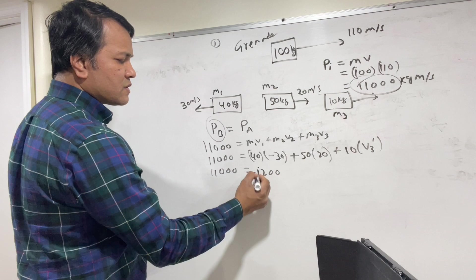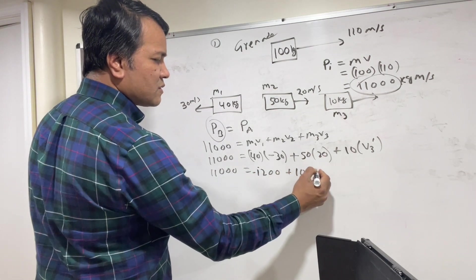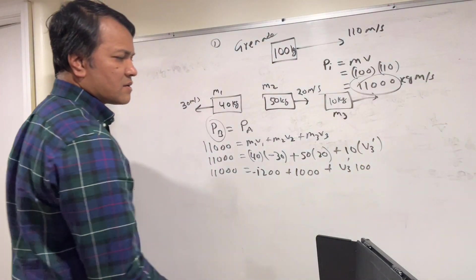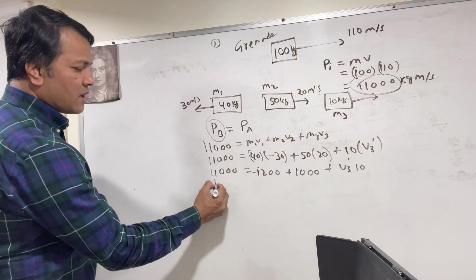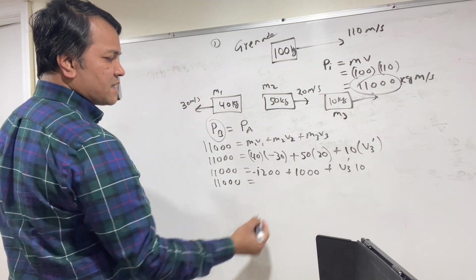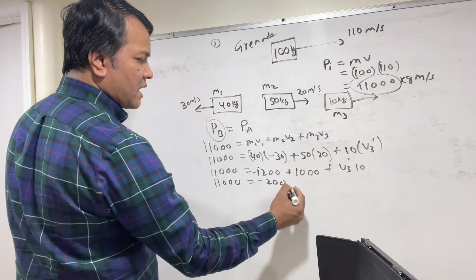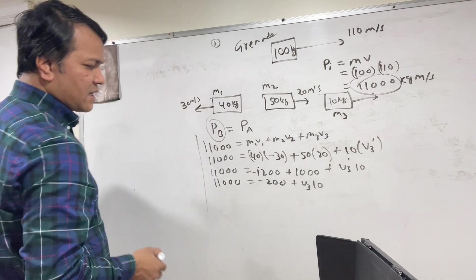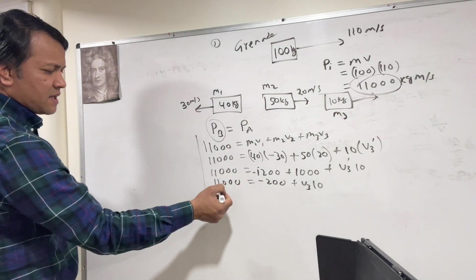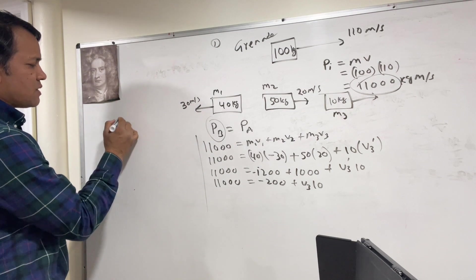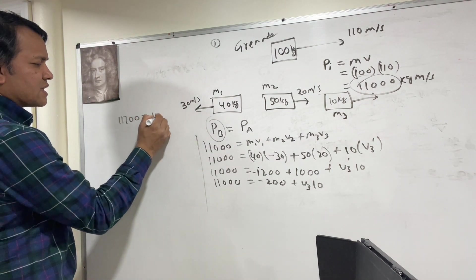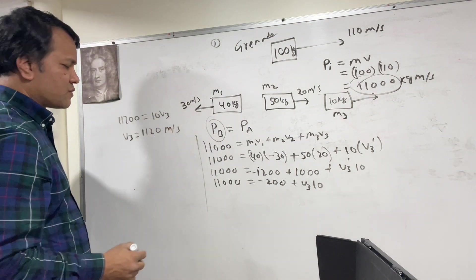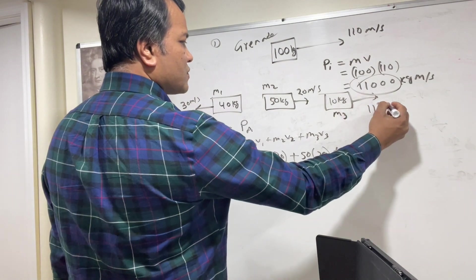So 11,000 = (40×−30) + (50×20) + 10×V3 = −1,200 + 1,000 + 10×V3. Bringing terms over: 11,200 = 10×V3, so V3 = 1,120 meter per second. This piece moves with 1,120 m/s.